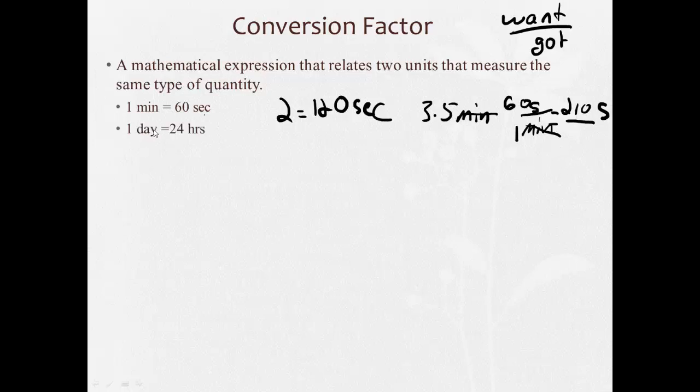Some other common ones, right? One day equals 24 hours. So, if I wanted to say, 3 days is how many hours? Well, I want hours. I got days. And it's 24 hours in one day. So, it's going to be 3 times 24, which is 72.